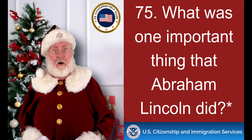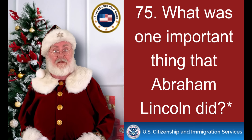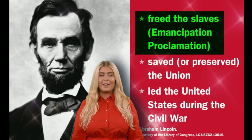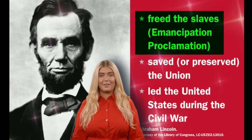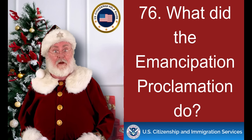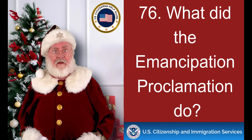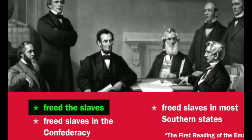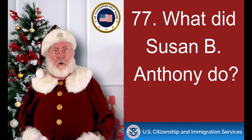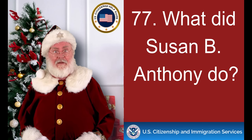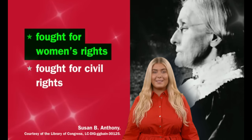What was one important thing that Abraham Lincoln did? Freed the slaves — Emancipation Proclamation. What did the Emancipation Proclamation do? Freed the slaves. What did Susan B. Anthony do? Fought for women's rights.